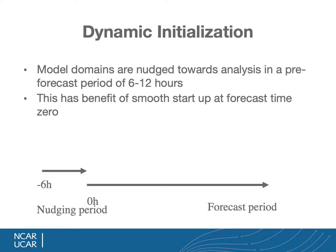The first application is dynamical initialization. The model domains are nudged towards an analysis in a pre-forecast period — for example, six hours ahead of the forecast, towards analyses at both six hours and zero hours and the interpolation between them. This has the benefit of a smooth start-up at the forecast start time: clouds will be initialized already, and the flow around topography will be balanced. Then you proceed with the regular forecast with nudging turned off.